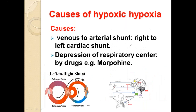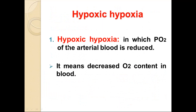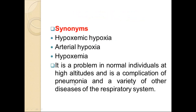Other causes include venous-to-arterial shunt — that is, right-to-left cardiac shunt — and depression of the respiratory center by drugs like morphine. As a result of all these causes, the partial pressure of oxygen in the arterial blood is reduced, meaning there is a decrease of oxygen content in the blood.